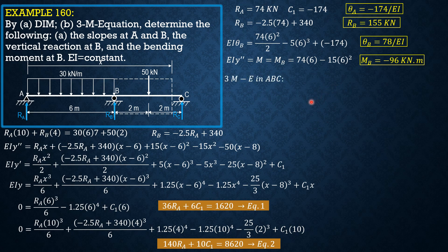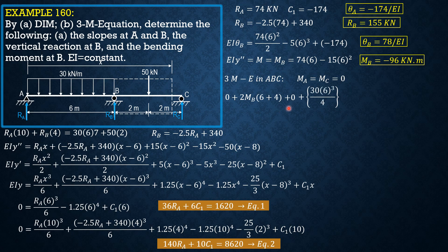Now the second way: using the three-moment equations. We apply the three-moment equation to spans A, B, C. Note that the moment at A and the moment at C are equal to zero. So: 0 times 6 plus 2 MB times (6 plus 4) plus 0 equals negative [6A1a over L1, which is wL cubed over 4: 30 times 6 cubed over 4], plus [6A2b over L2, which is Pb squared over L times (L squared minus b squared): 50 times 2 over 4 times (4 squared minus 2 squared)].